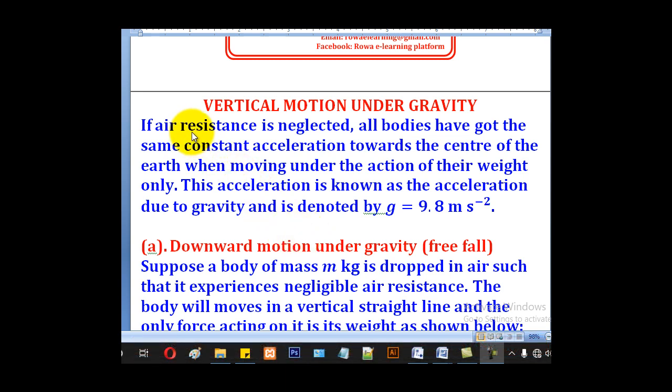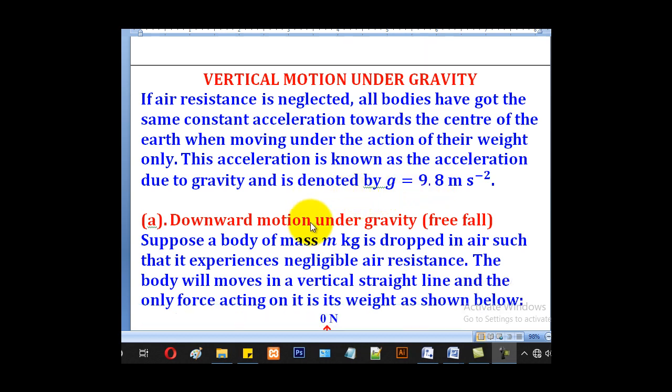All bodies have the same constant acceleration towards the center of the earth when moving under the action of their weight only. This acceleration is known as acceleration due to gravity and is noted by the letter g. In M level math we shall use g as 9.8 meters per second squared.